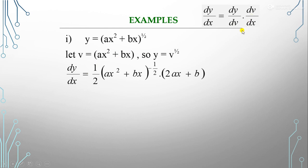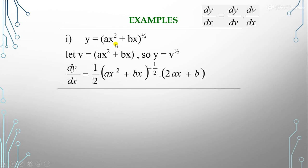Now dy/dx = dy/dv × dv/dx. Substituting, dy/dv = (1/2)(ax² + bx)^(-1/2) and dv/dx = 2ax + b. So dy/dx = (1/2)(ax² + bx)^(-1/2) × (2ax + b). This is how we find the derivative using the chain rule.